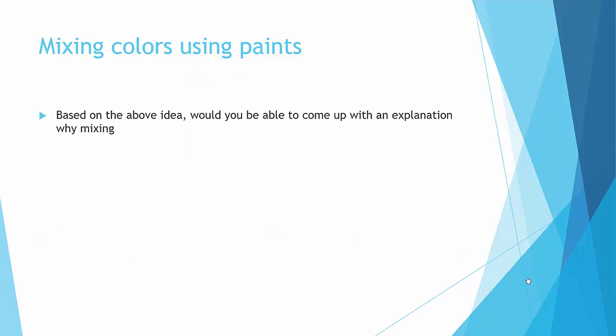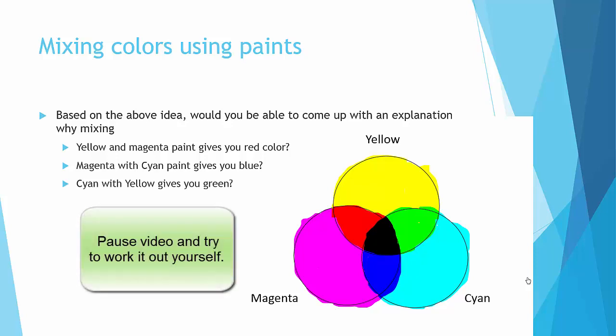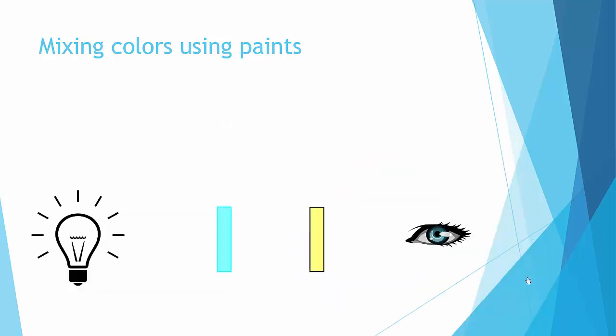So based on the above idea, would you be able to come up with the explanation why mixing yellow and magenta paint will give you red color? Magenta with cyan gives you blue color. Magenta and cyan with yellow gives you green color. Think about it for a while.